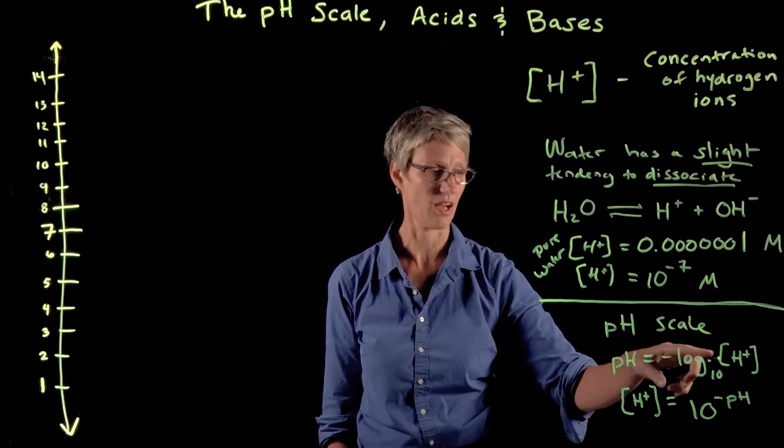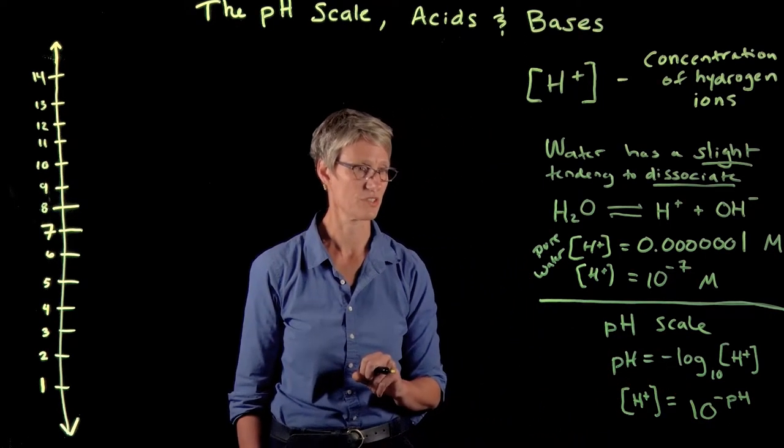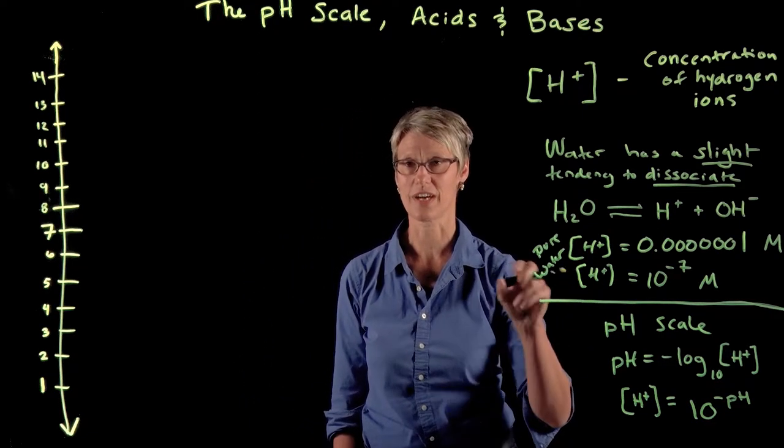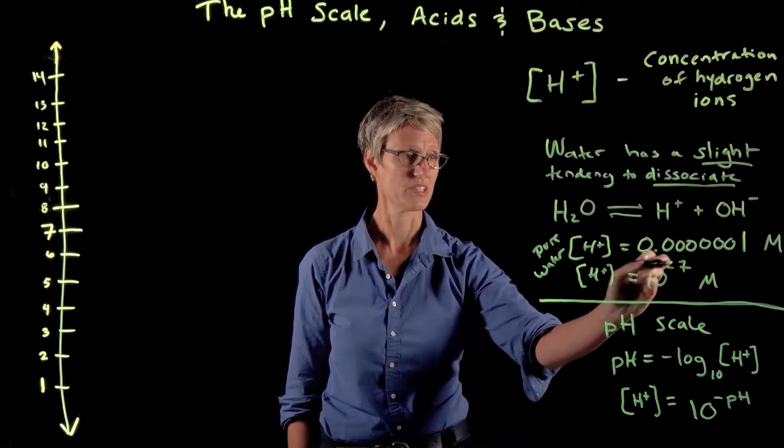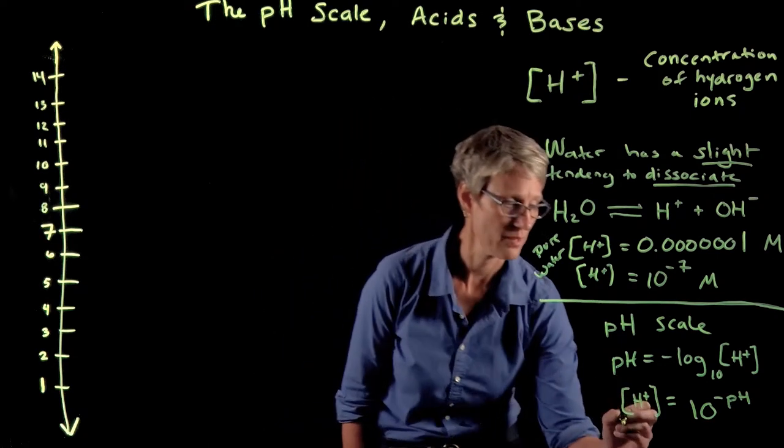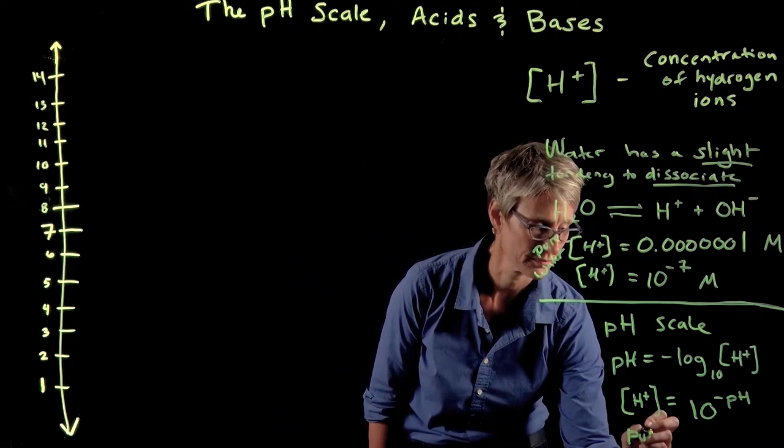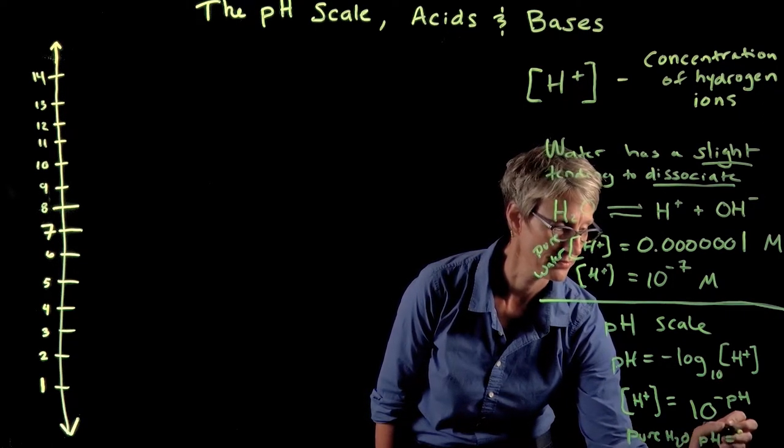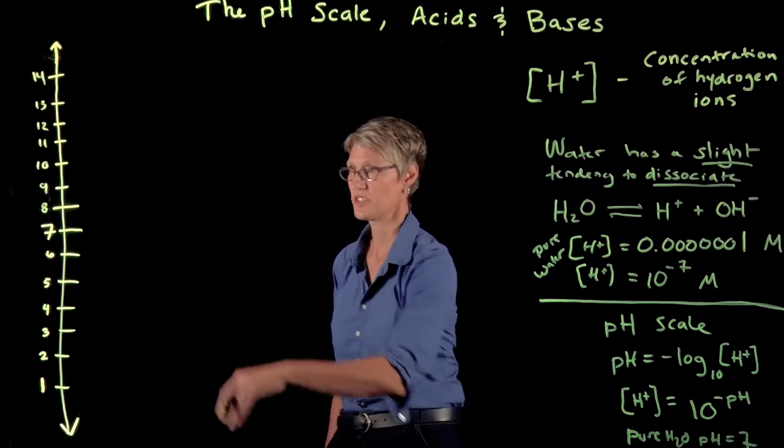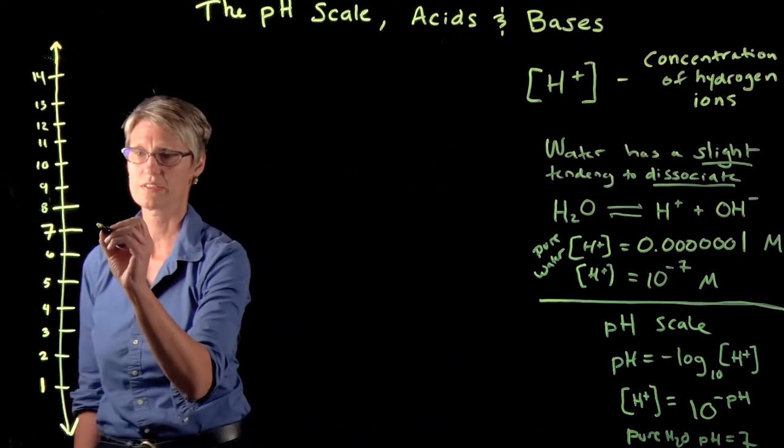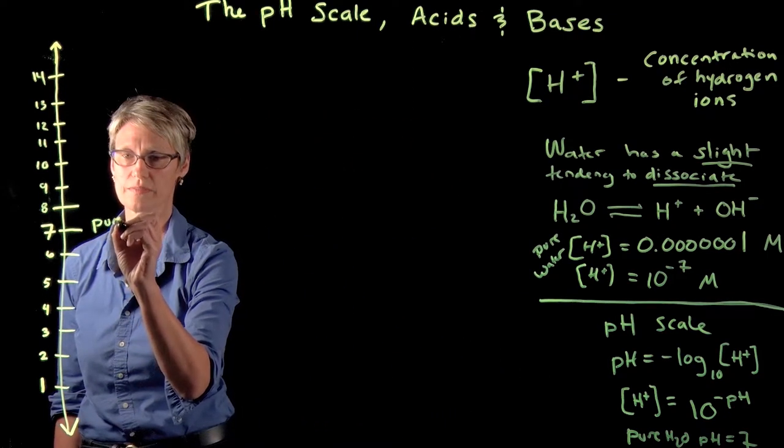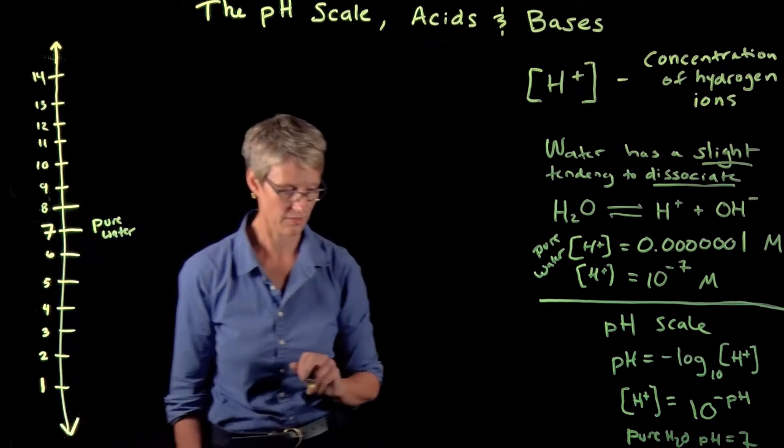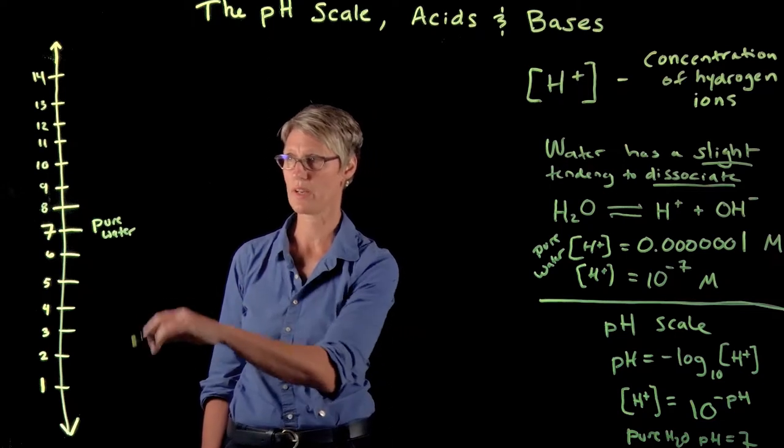The concentration of hydrogen ions in pure water was 10^-7, so pure water has a pH of 7. I've drawn a pH scale over here. Pure water is right in the middle of the pH scale, which goes from 1 to 14.